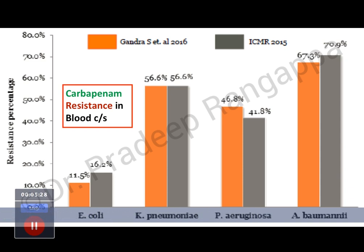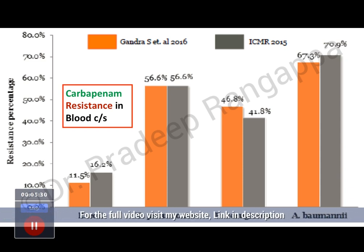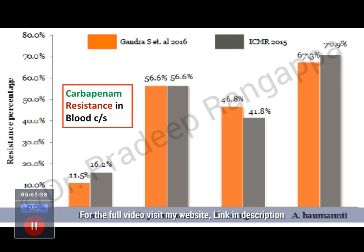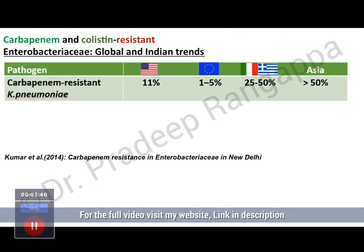Right now, even in our ICU, Klebsiella pneumoniae seems to be in the forefront, and even Pseudomonas. Acinetobacter is seemingly getting a little under-emphasized, but I am sure this is a pattern most of you are also seeing.